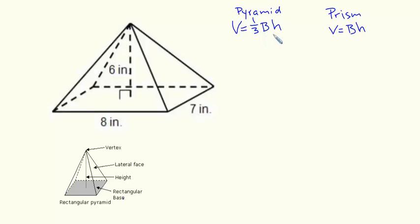The reason why is because if I had a prism with the same dimensions, a rectangular prism that had an 8 by 7 inch base with a height of 6 inches, I could essentially fit three pyramids with the same dimensions into that prism.